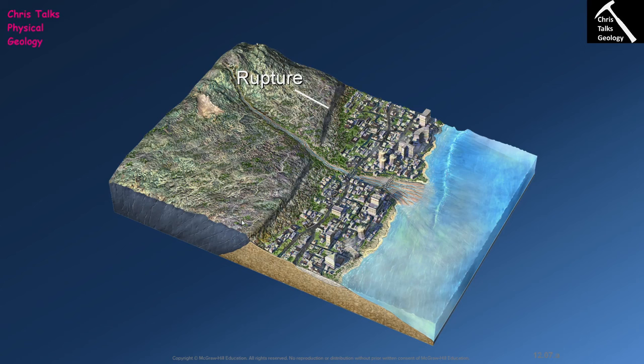We have a rupture right here, and of course this rupture is going to be produced when fault movement occurs. When fault movement occurs, we've ended up with the formation of this scarp here. So first of all, if you happen to have a house built right where this rupture occurs, your house is going to get quite badly damaged.